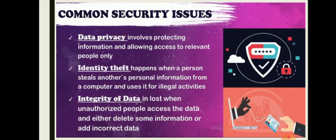Now, the first technique we will learn is identity theft, which is on page number 97 of your book. Please hold your lead pencil and underline the definition of identity theft. Identity theft is very common — it happens when one person steals another person's information from a computer and uses it for illegal activity. Please underline those two lines. The thief might gain access to a person's password, personal data, credit card information, hobbies, and interests. When police try to trace the criminal, they may end up arresting the person whose identity was stolen instead of the real criminal.